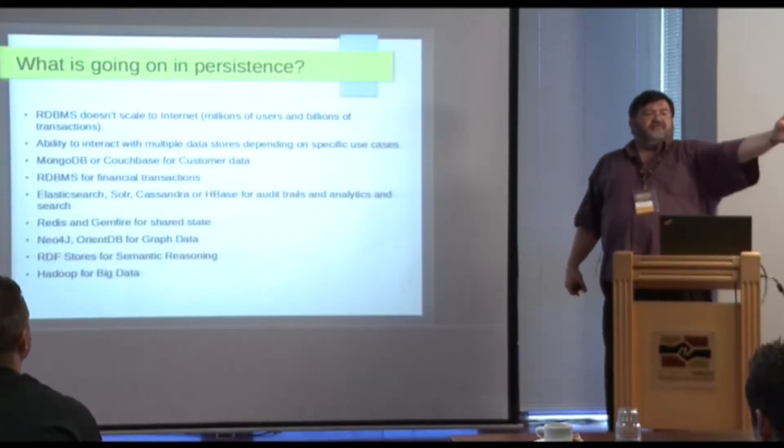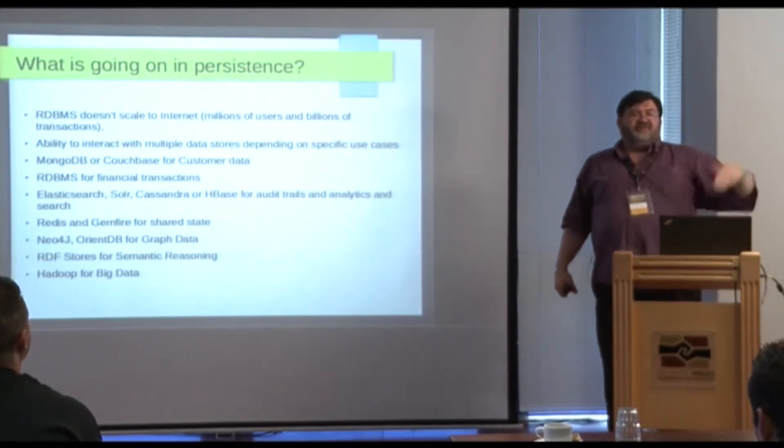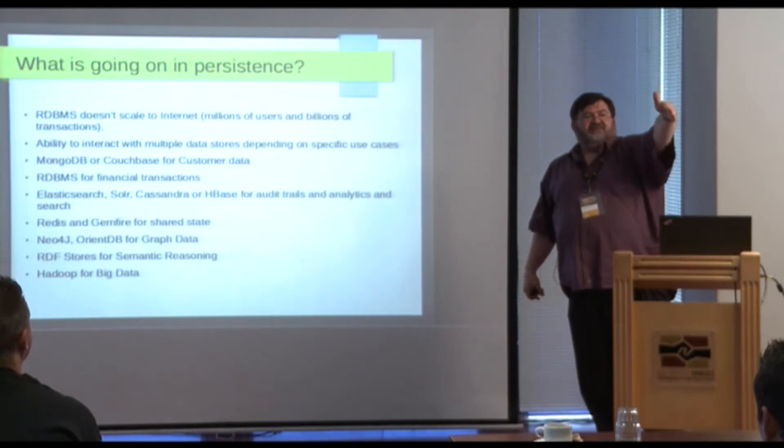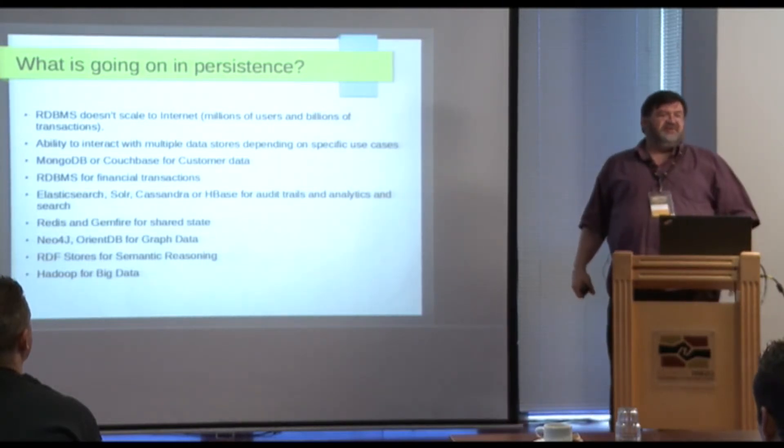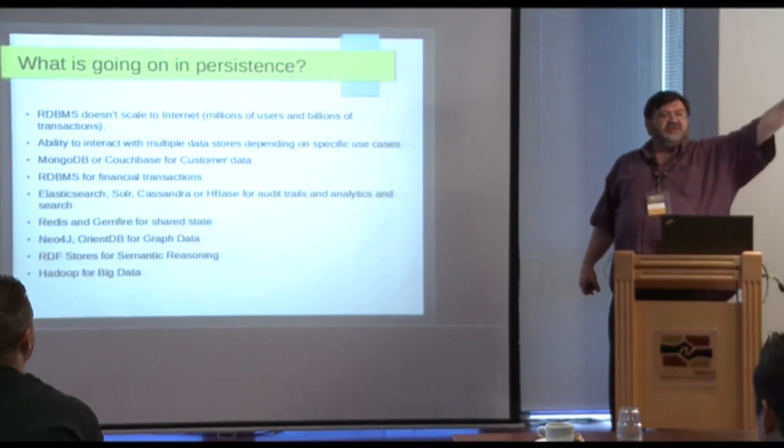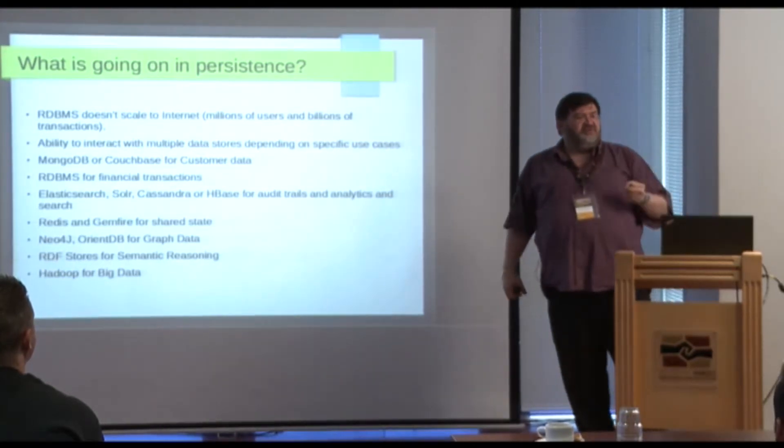Neo4j and OrientDB are graph databases, and those are good for social data — you want to find out how all these things are connected and work the graph. If you've got all the people in the world and their family histories, and you want to answer the question: give me a list of all this person's cousins. What is a cousin? A male child of his parent's siblings. What is a sibling? Someone who shares the same parent. You can add those rules, and the graph database is the most efficient way to extract that type of information.